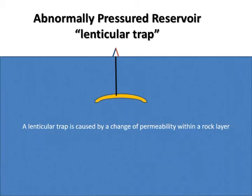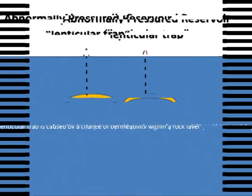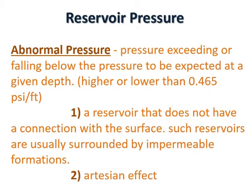A lenticular trap is caused by a change of permeability within a rock layer. Abnormal pressure is pressure exceeding or falling below the pressure expected at a given depth — higher or lower than 0.465 psi per foot. Abnormal pressure can occur in one of two ways: first, a reservoir that does not have a connection to the surface, such as reservoirs surrounded by impermeable formations — a lenticular trap is such an example; and second, the Artesian effect, where the outcrop is at an elevation greater than the rig elevation.